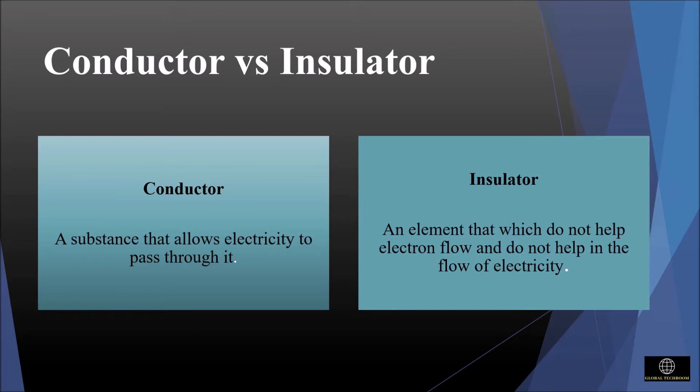While insulators are elements which do not help in electron flow as well as do not help in flow of electricity. So it is used to make the outer covering of the wire and many other safety materials. Examples: wood, glass, plastic, etc.